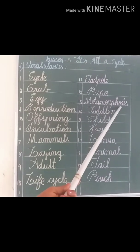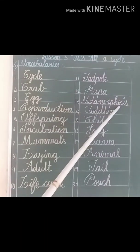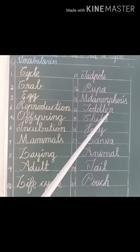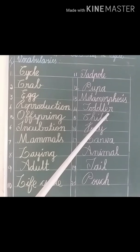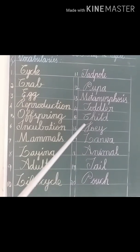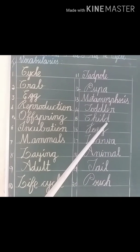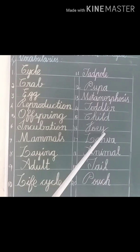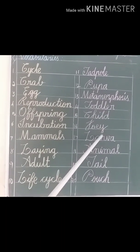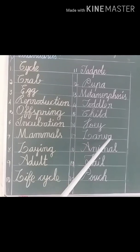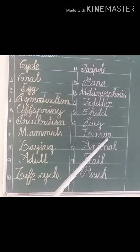Metamorphosis — it means a complete change of form. Toddler — it means a young child who has only just learned to walk. Child — it means a young person. Joey — it means a young kangaroo or wallaby. Larva — it is a form of an insect or an animal.